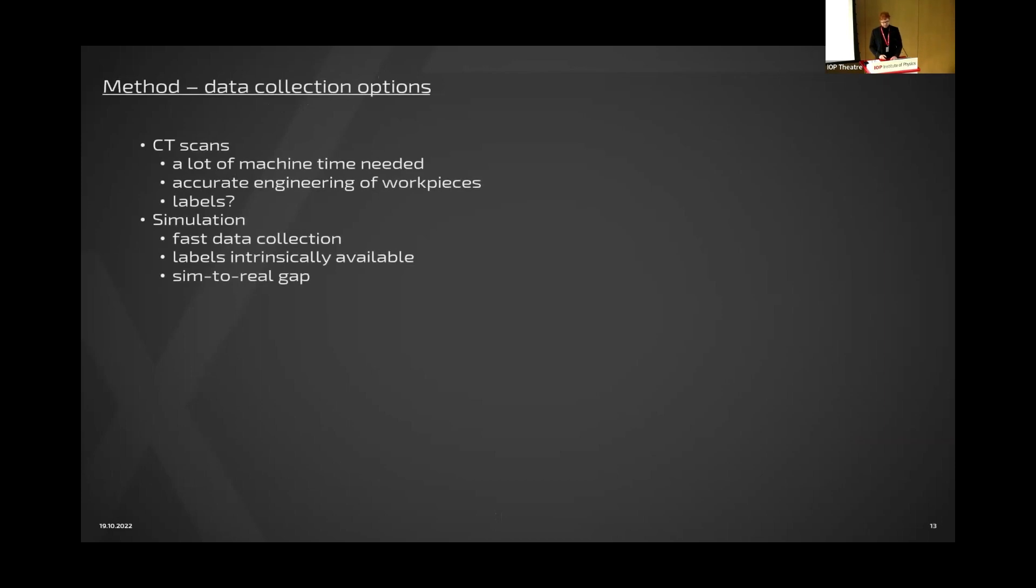We all know for deep learning and almost every machine learning thing we need a very large pool of data. There are two possibilities to collect this data. We can try to do CT scans. We need a lot of time for that, we need some samples, we have to design the samples maybe with some kind of linear gradient of material composition. We have to manufacture them, we have to make sure that these manufactured parts are really looking like in the design. And as we've already seen, this is not always the case.